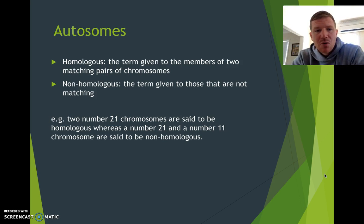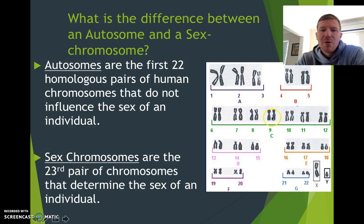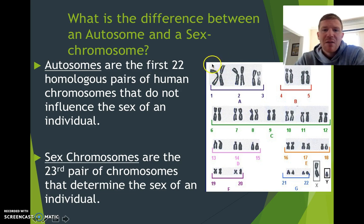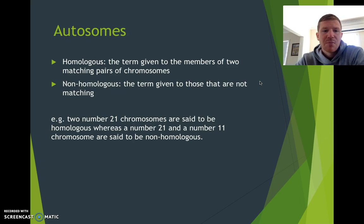Now the next term we look at is what's called homologous or non-homologous. Homologous is a term given to the members of two matching pairs of chromosomes. So if we look back here, we would say that these are a homologous pair because they're the same size, same shape, the same banding — they are a matching pair.